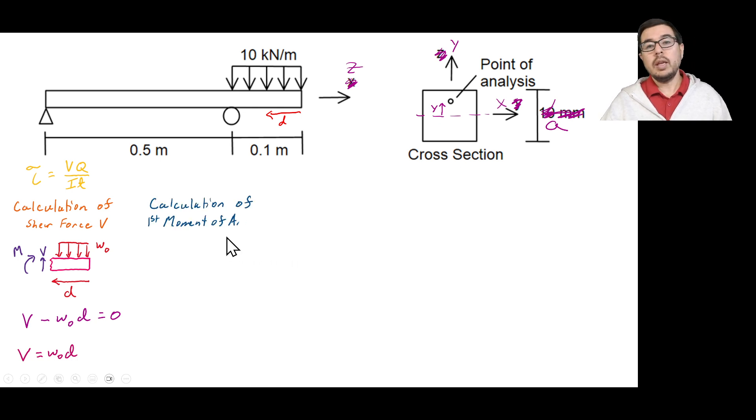Next, let's go ahead and calculate the first moment of area q. So for this calculation, we're just going to redraw this cross section, as you see here. This point distance y or y prime above the neutral axis is the location where we're trying to perform and calculate this transverse shear stress.